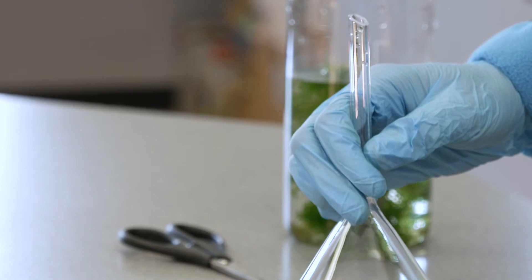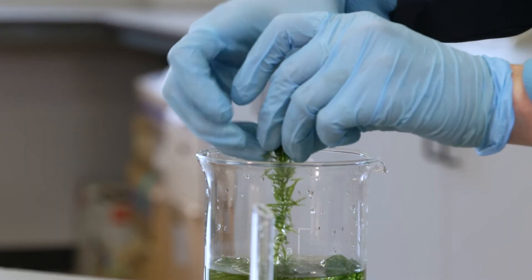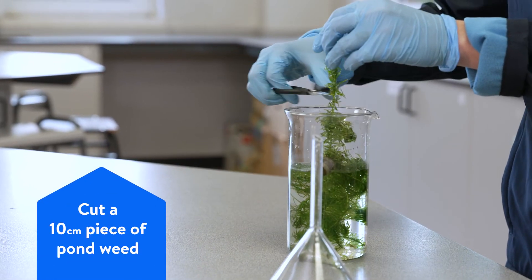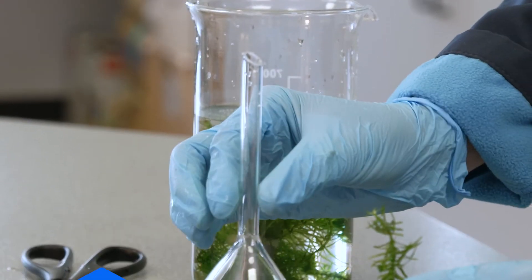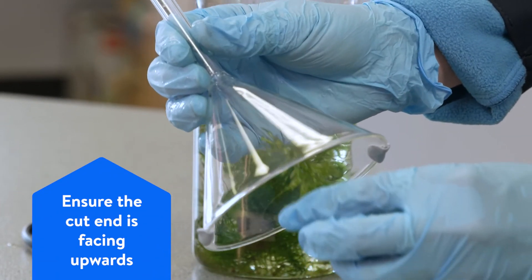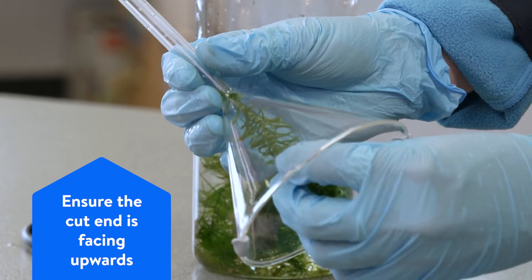Cut a 10 centimeter piece of pond weed and place this in the filter funnel, and try to ensure that the cut end of the pond weed is facing upwards. Then place the filter funnel containing the pond weed into the beaker of water.